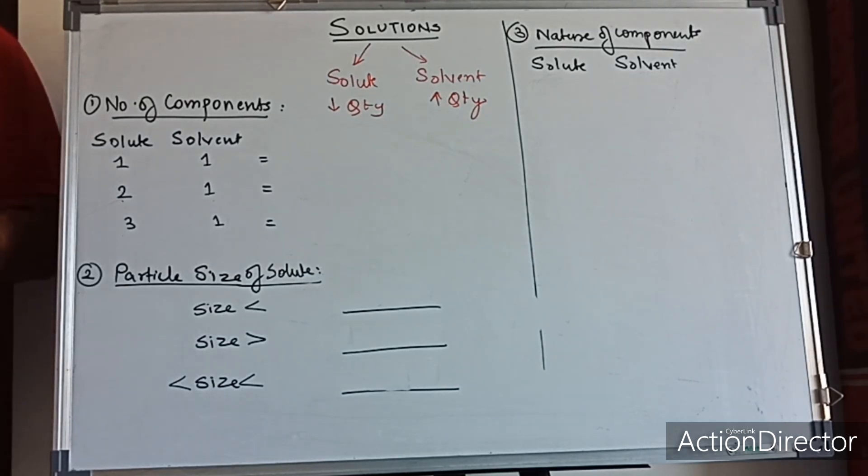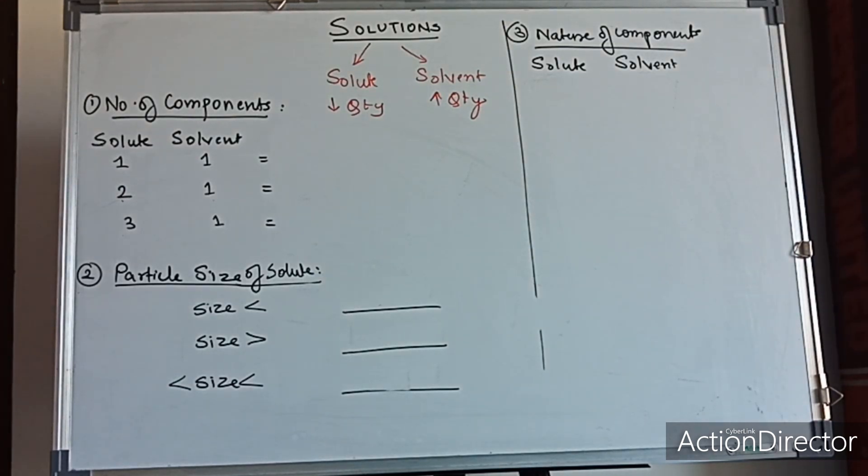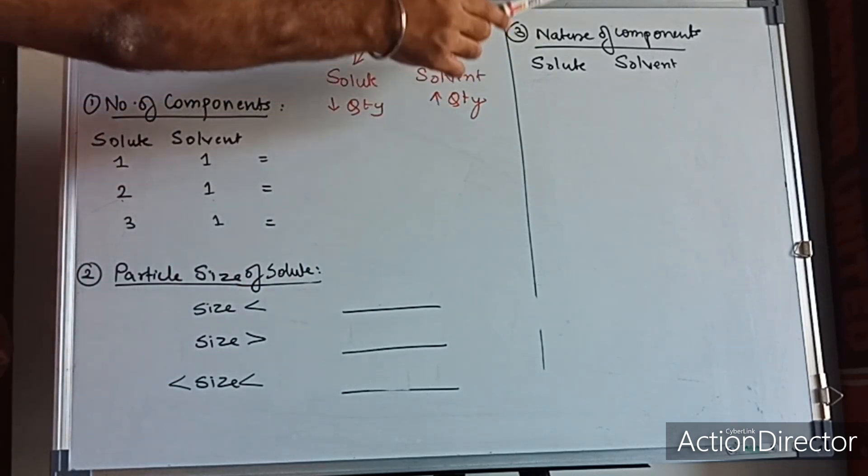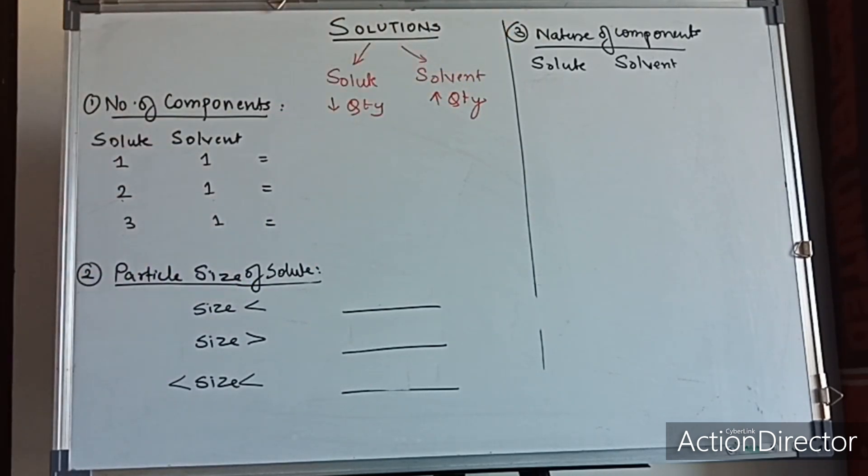Now solutions can be classified in different ways based on certain parameters. So kya kya parameters hai dekhte hai - the first parameter is number of components, the second parameter is particle size of the solute, and the third parameter is the nature of the components.